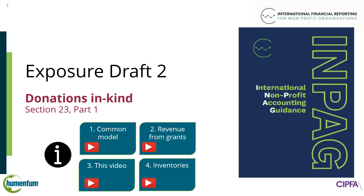There are four videos relevant to donations in kind in this series and we recommend watching them in order. First, we have a video called Common Model for Grant Revenue and Expenses which introduces new terms. Next is Revenue from Grants and Donations, explaining general recognition principles. This video focuses on specific exemptions and disclosure requirements for donations in kind. Lastly, Inventories is relevant in cases of donated inventory. Links to these videos are in the YouTube description.